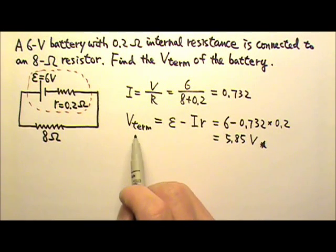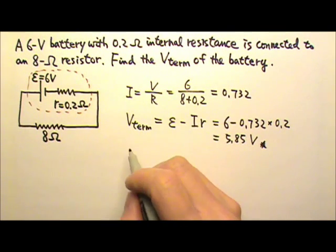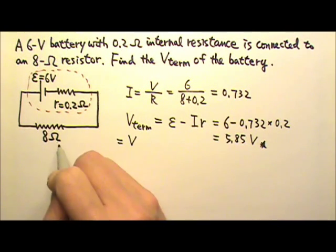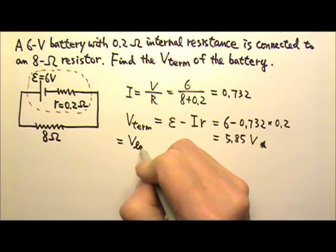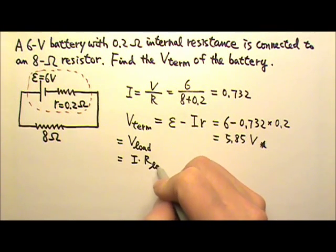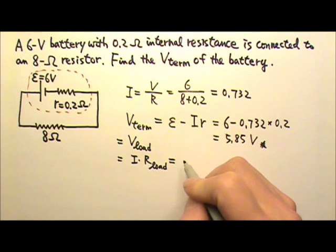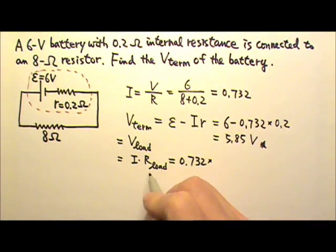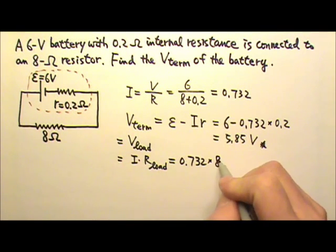Or another way to find the terminal voltage is to say that the terminal voltage also equals to the voltage across the load, which is I times R of the load. So this will be 0.732 times the load resistance, 8, which of course will give you the same answer.